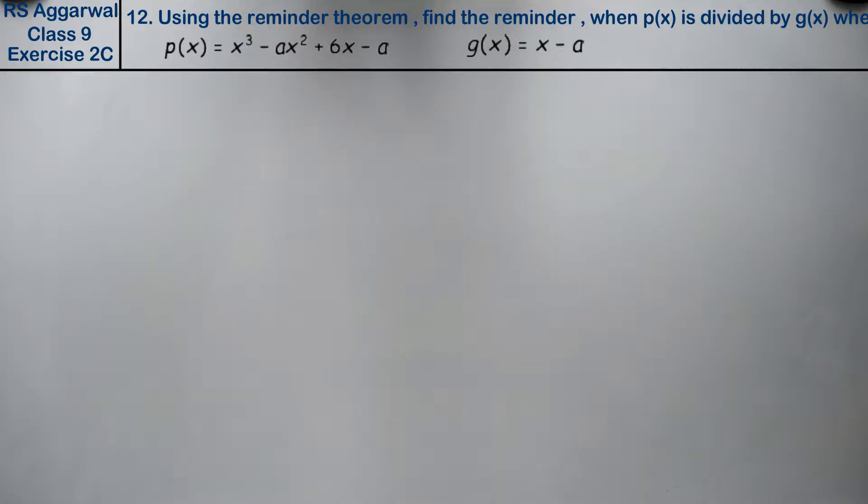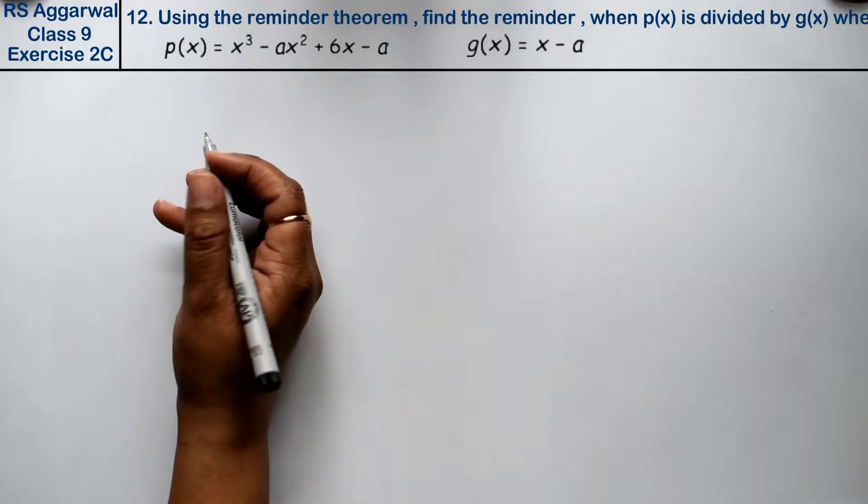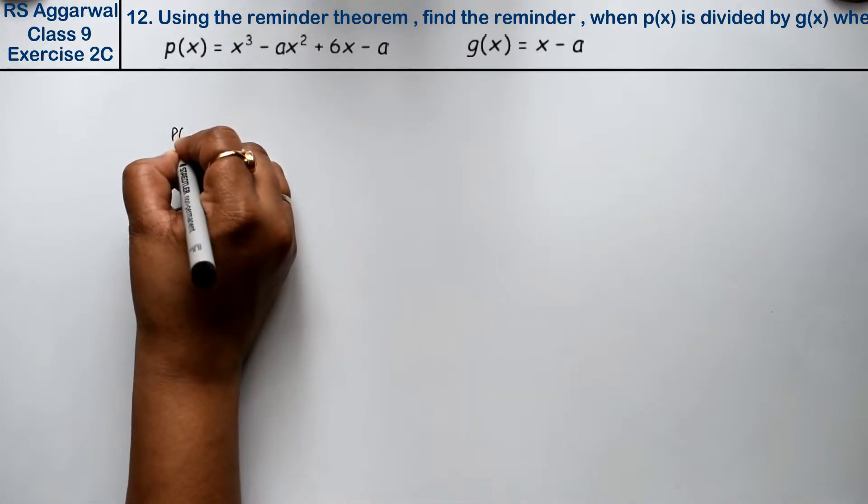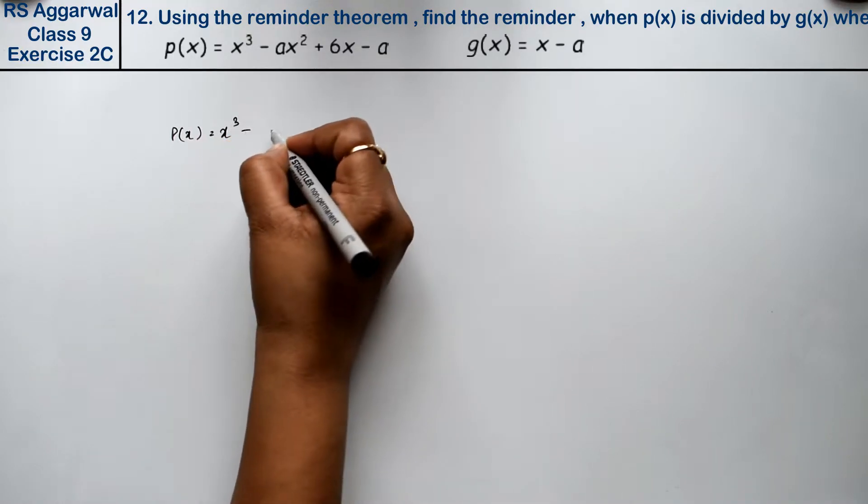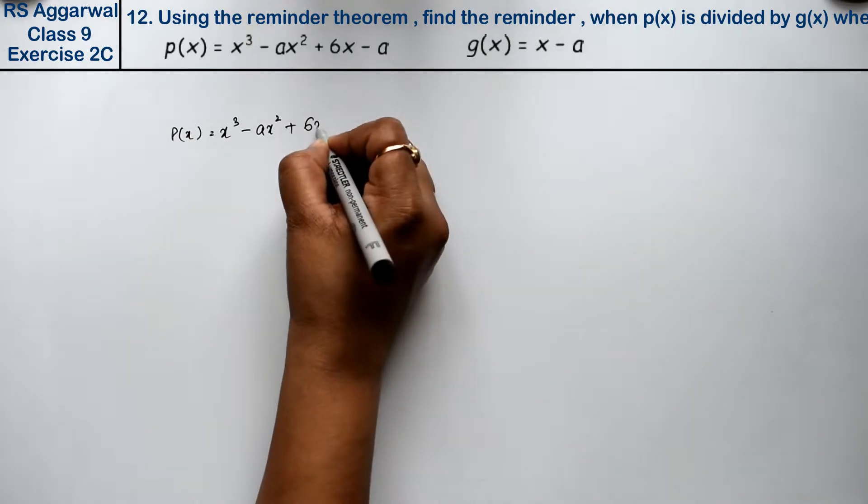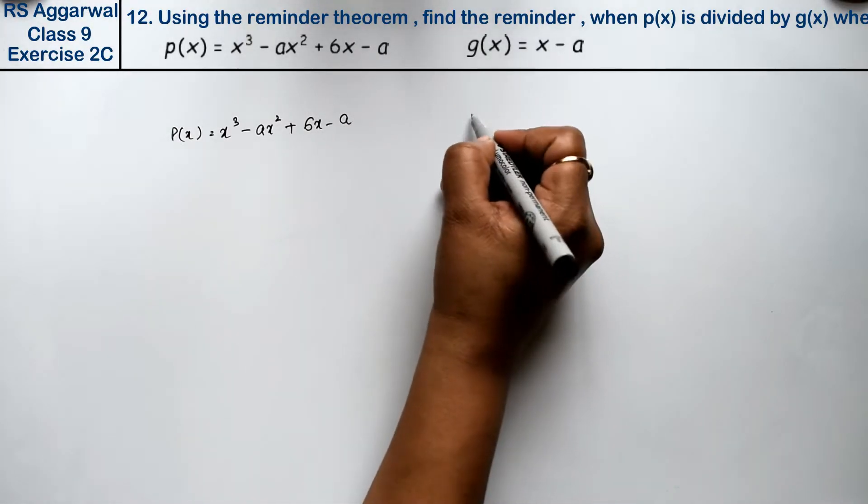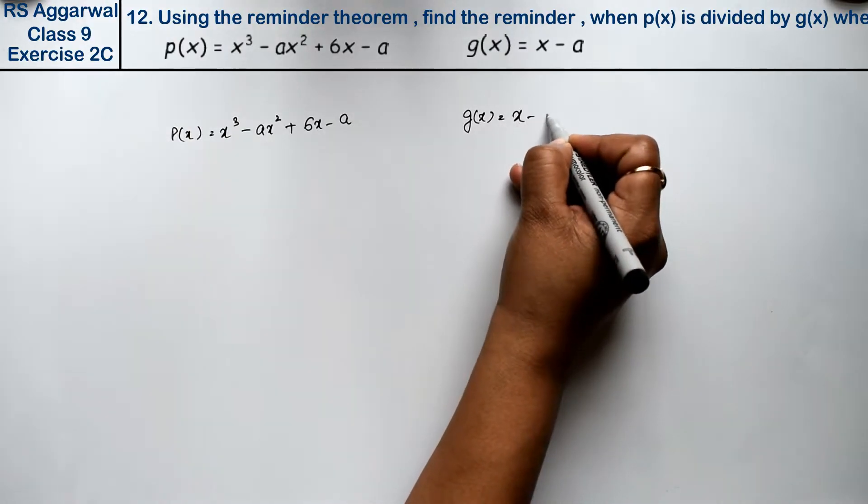Let's do question number 12 of exercise 2C, that is polynomial. Question number 12 is: if p(x) equals x cube minus ax square plus 6x minus a, and g(x) equals x minus a.